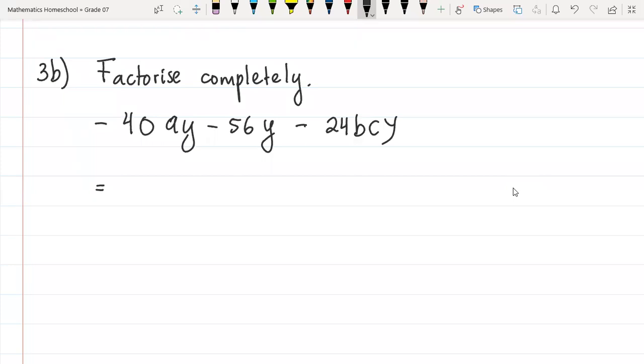The question is factorize completely: negative 40ay, negative 56y, negative 24bcy.